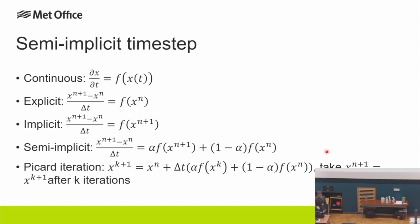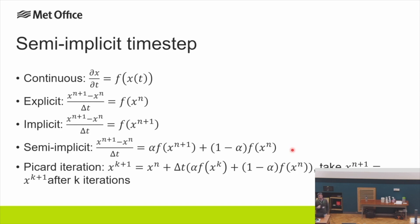This semi-implicit approach applies to the dynamics terms - Coriolis, pressure gradients, and transport. For sub-grid physics schemes, some are treated explicitly as slow physics - evaluated once at the start of the time step because they're expensive - while others are implicit fast physics, iterated because their time scales are tightly coupled with the dynamical core. Examples of slow physics include radiation; fast physics includes processes tightly coupled to the dynamics.